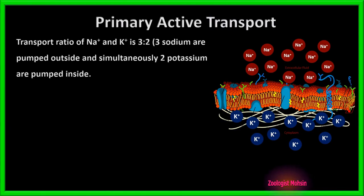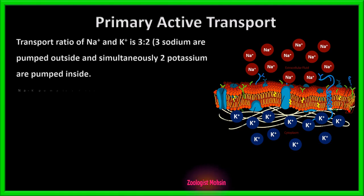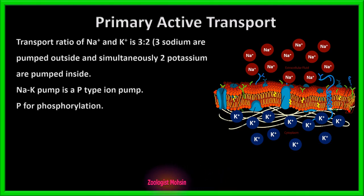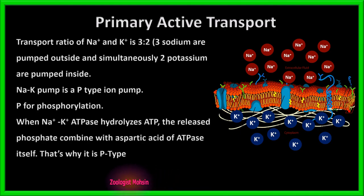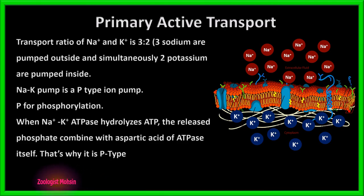The transport ratio of sodium and potassium is 3:2 — 3 sodium ions are pumped outside and simultaneously 2 potassium ions are pumped inside. The sodium-potassium pump is a P-type ion pump. P stands for phosphorylation. When sodium-potassium ATPase hydrolyzes ATP, the released phosphate combines with the aspartic acid of the ATPase itself — that's why it is called a P-type pump.